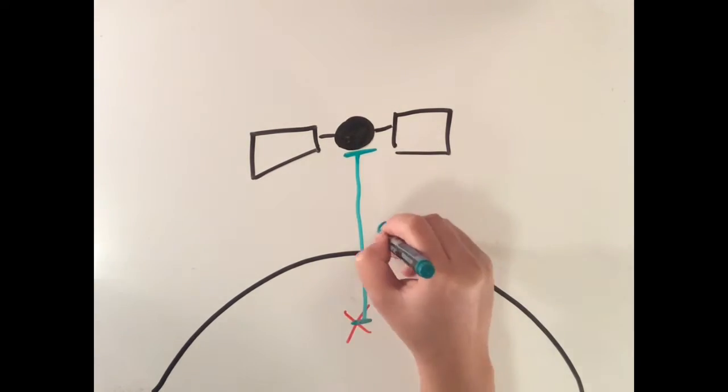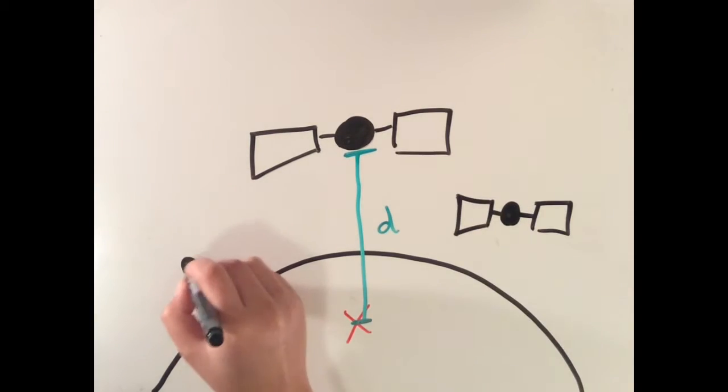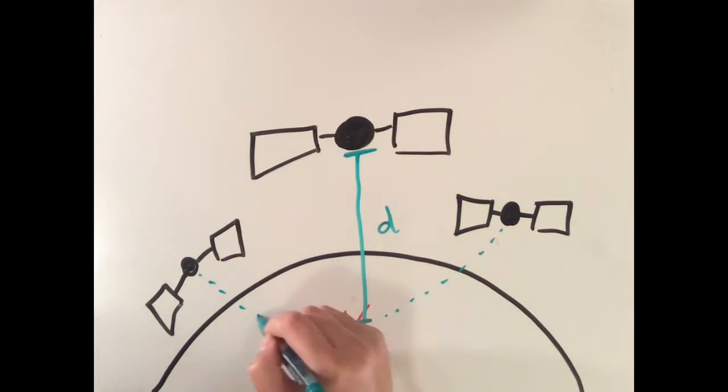However, one satellite alone cannot calculate location. GPS needs at least three or more satellites to accurately measure position.